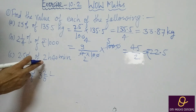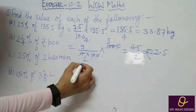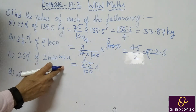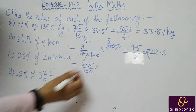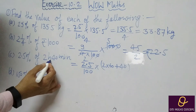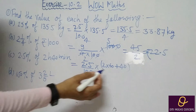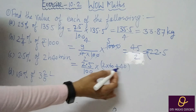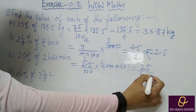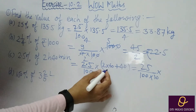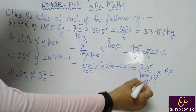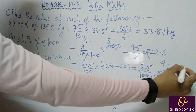Part C: 2.5% of 2 hours 40 minutes. We write 2.5 divided by 100 into 2 hours 40 minutes. We convert this to minutes: 2 × 60 + 40 = 120 + 40 = 160 minutes. To remove the decimal from 2.5, we multiply numerator by 10, giving 25 over 1000. After cancellation, 25 fours are 100, and the result is 4 minutes.